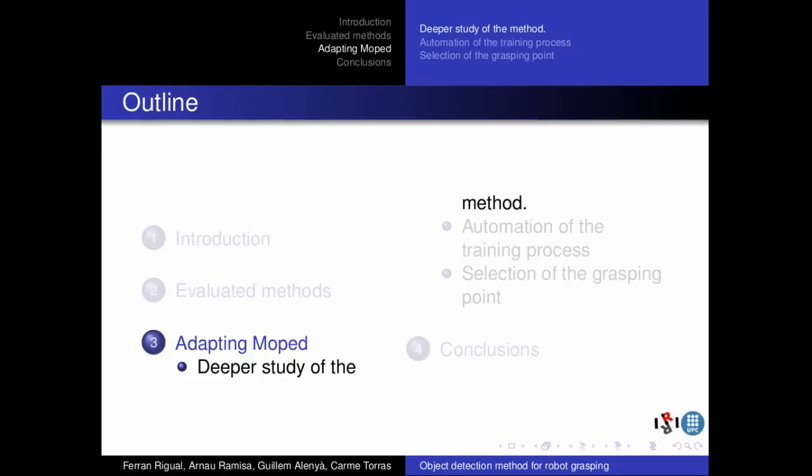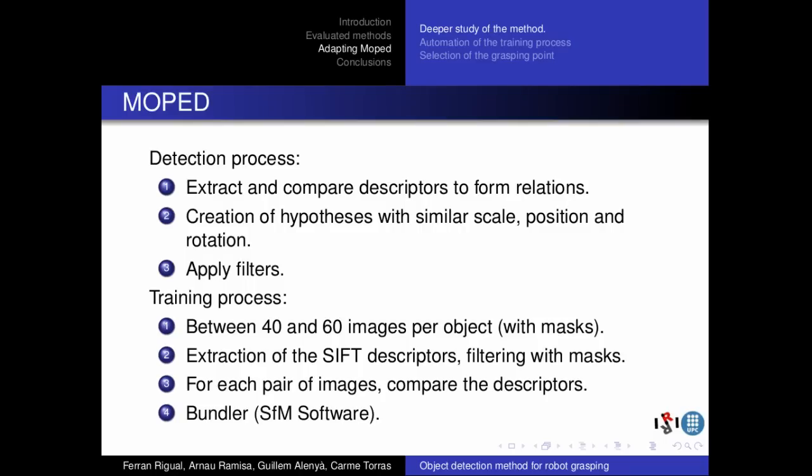Now that a method has been chosen, we proceed with a deeper study of the method in order to analyze if any improvement or adaptation can be done. We focus on the detection and the training processes. In the detection process, the method extracts the descriptors from the input images and compares them with the ones of the previously trained object models. For relations with similar scale, position and rotation, hypotheses are formed. Final relations are those which remain after the quality filters have been applied.